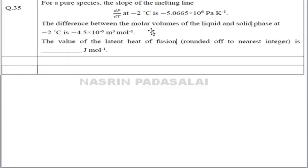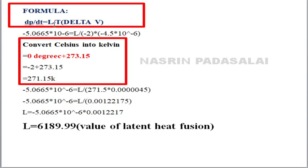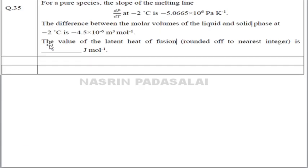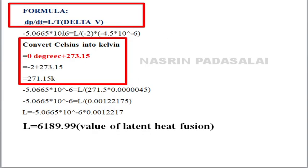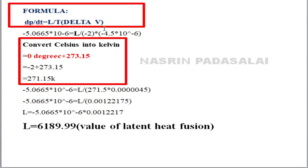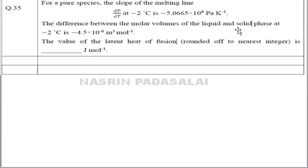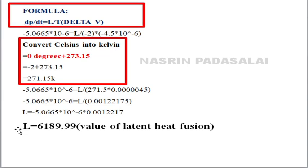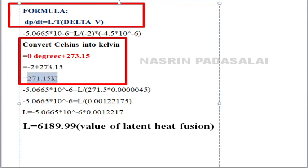The next question gives the slope of the melting line for a few species and the difference between molar volumes, asking for the latent heat of fusion. The formula is dp/dT = L / (T·ΔV). The slope is given as 10⁻⁶, latent heat L is what we need to find, T is given as −2°C, and ΔV is the difference between molar volumes of liquid and solid. First, convert celsius to kelvin: T = −2 + 273.15 = 271.15 K.